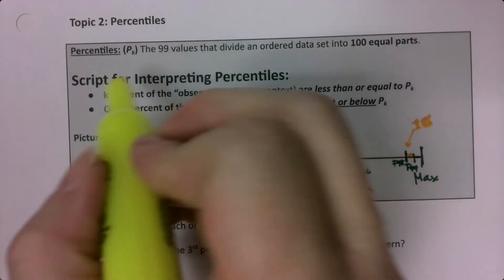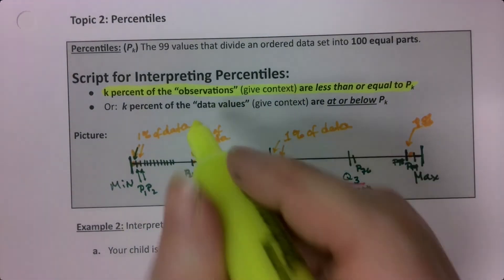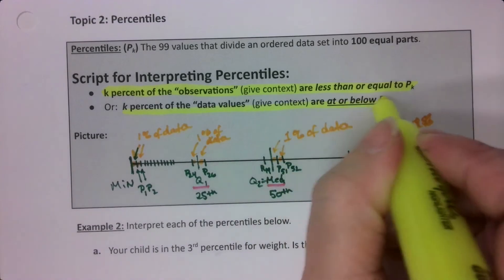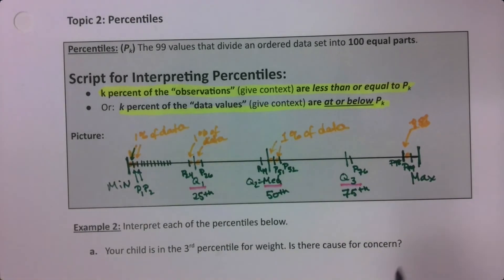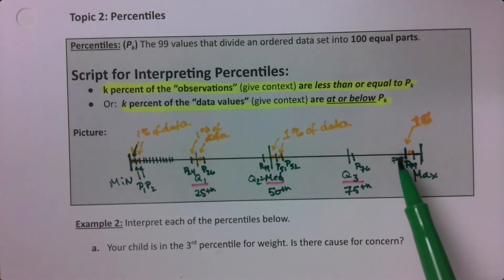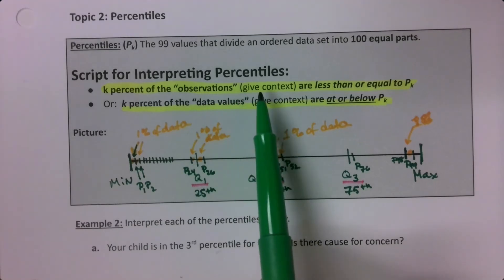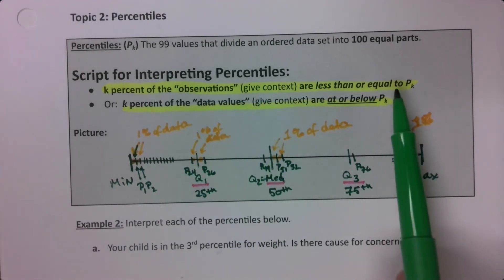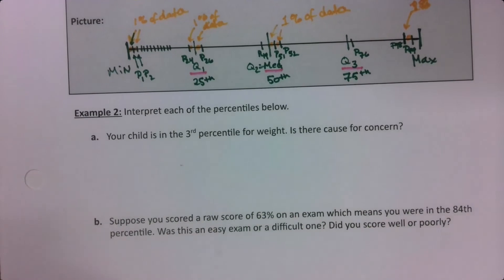So K percent of the observations, give it some context, are less than or equal to your value. Another way they say that is that K percent of the data values are at or below your score. If you're over here at 98, P98, if you scored that value, 98% of the test scores, that would be your observations, that in context, are less than or equal to your score, or at or below your score. So let's think about this for some examples.